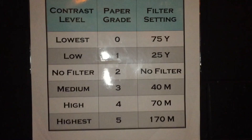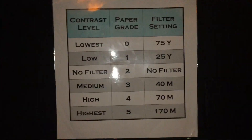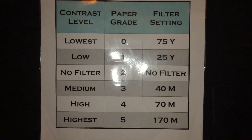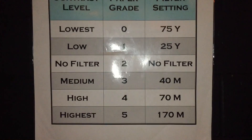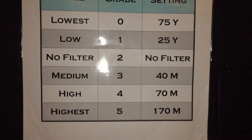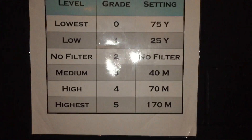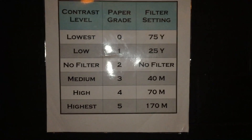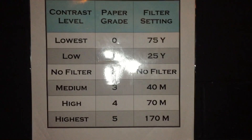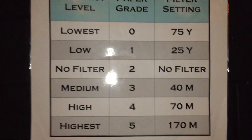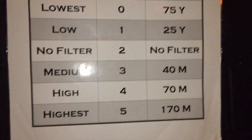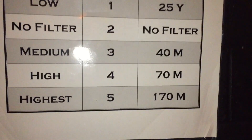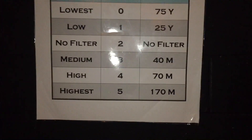If you want to go a little higher, you can go to level four by putting in a number four filter or setting the magenta filter to 70. For the highest level, number five, you insert a number five in the Omega or set the Bessler magenta filter to 170 to increase your contrast.